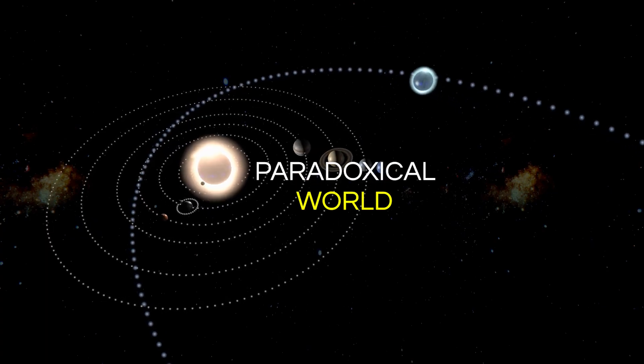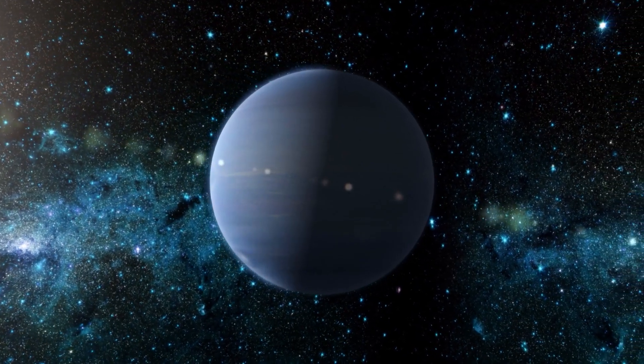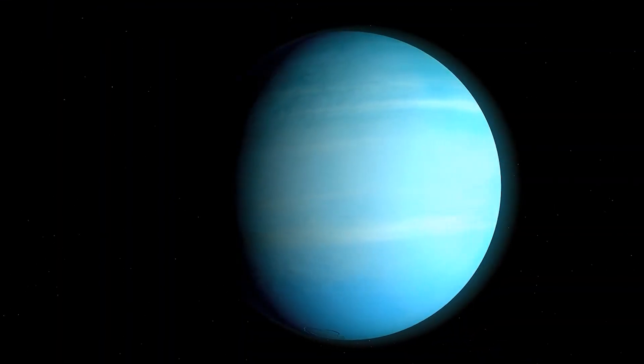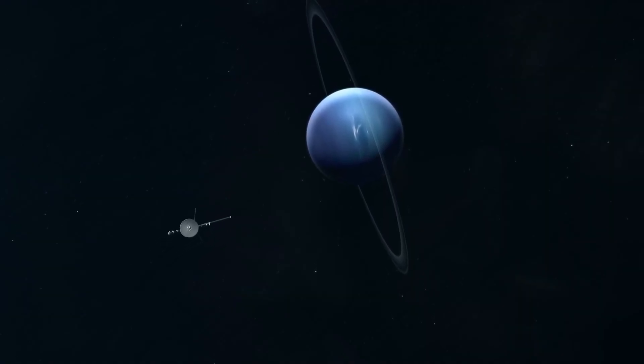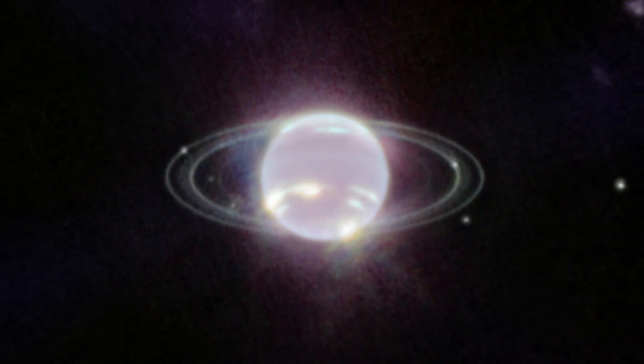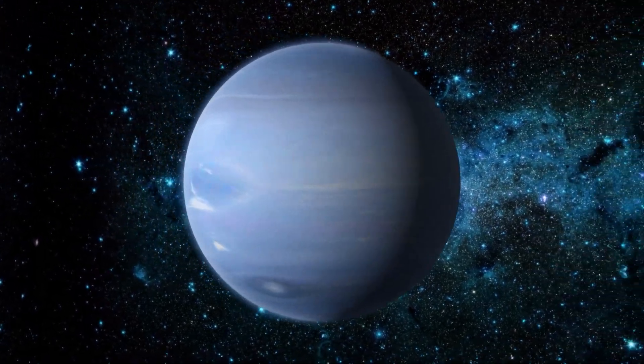A paradoxical world where one of the coldest planets in our system nurtures an unfathomable ocean of scorching hot water. Today, we embark on a journey to uncover the enigmatic truths of Neptune, delving into its bewitching rings, unraveling the story behind its ethereal azure hue, and unveil the first real images of Neptune and the celestial wonders that lie hidden within its icy embrace.